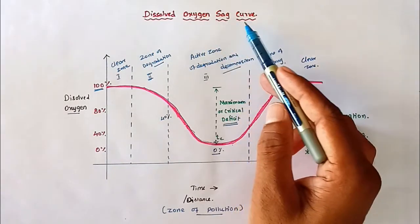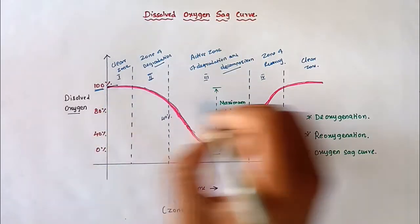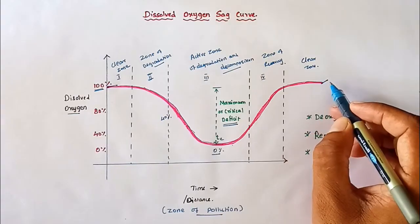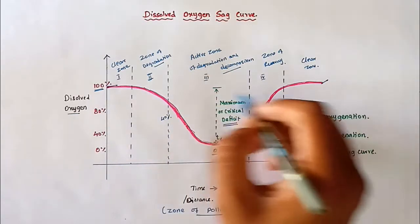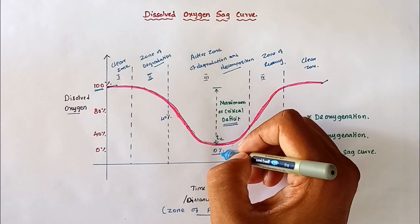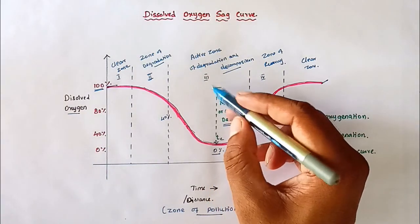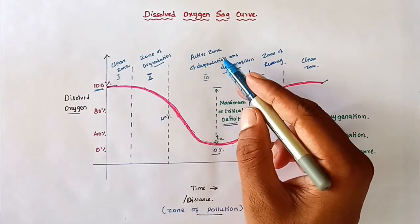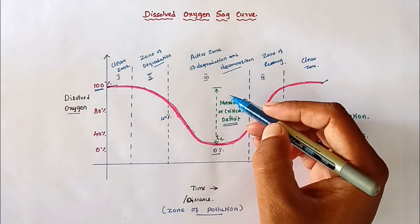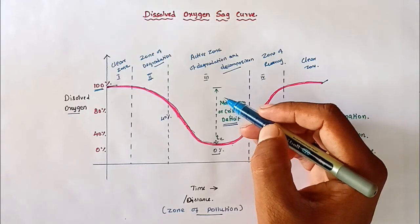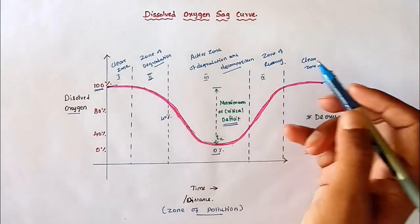After the zone of recovery, clear water returns to the river. The dissolved oxygen level is 100% at the starting state and also 100% at the finishing stage. In between, the dissolved oxygen reduces to zero — that is called the maximum critical deficit — which occurs only in the active zone of decomposition, where all material in the wastewater is decomposed by microorganisms.